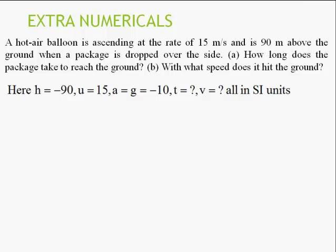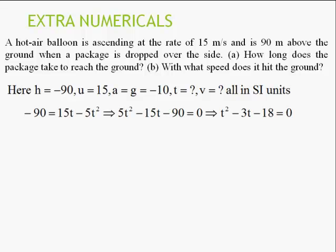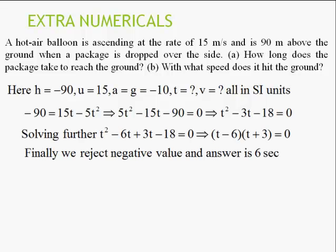Taking the drop point as the reference, h = −90 m (ground is below), u = +15 m/s (upward), and acceleration = −10 m/s² (taking g = 10 m/s²; in exams use g = 9.8 unless specified otherwise). The equation becomes: −90 = 15t − 5t². Simplifying gives 5t² − 15t − 90 = 0, or t² − 3t − 18 = 0. Factoring: t = 6 seconds or t = −3 seconds. Since time cannot be negative, the answer is 6 seconds.